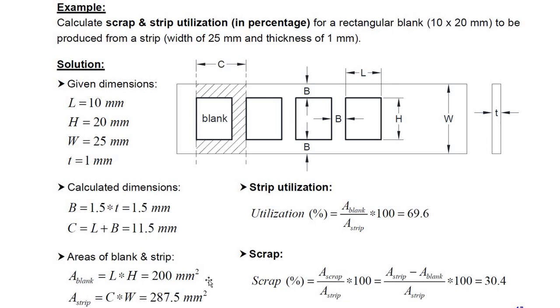Whereas, although the total length of the strip has not been given, we are more concerned about how much amount of area we need on the strip to progress ahead by creating one blank at a time. So minimum to create one blank we need C into W. Total width has been given as 25 millimeters, and C we calculated as 11.5 millimeters which covers the length of the blank plus B.